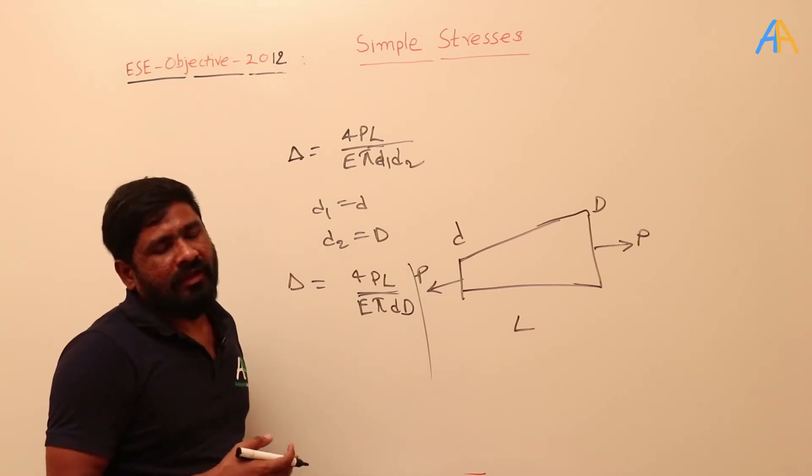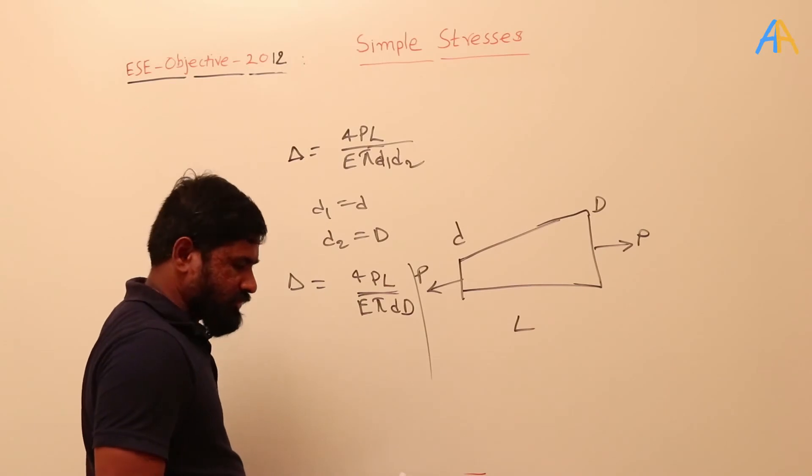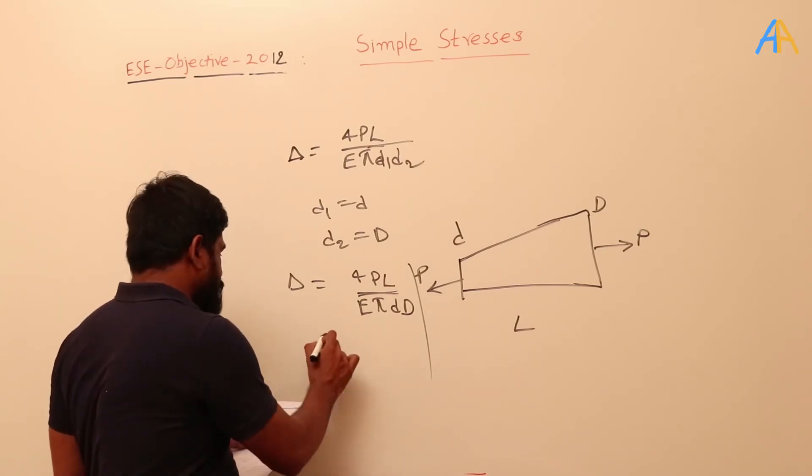So this formula is coming again and again. So which option is matching with this? Option C is matching.